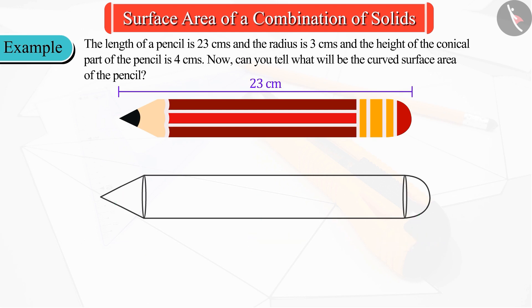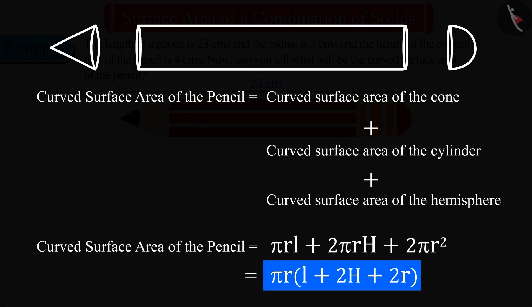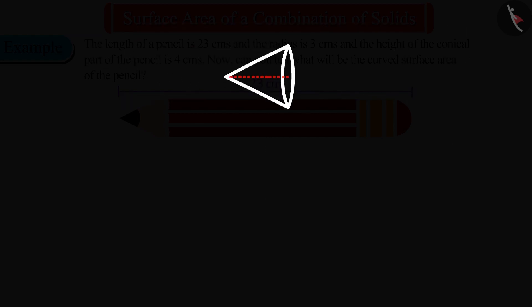Now if we sum the curved surface area of these three figures, then we will get the curved surface area of the pencil. We know the height and the radius of the cone, but for the surface area we need to find the measurement of the slant height L of the cone.